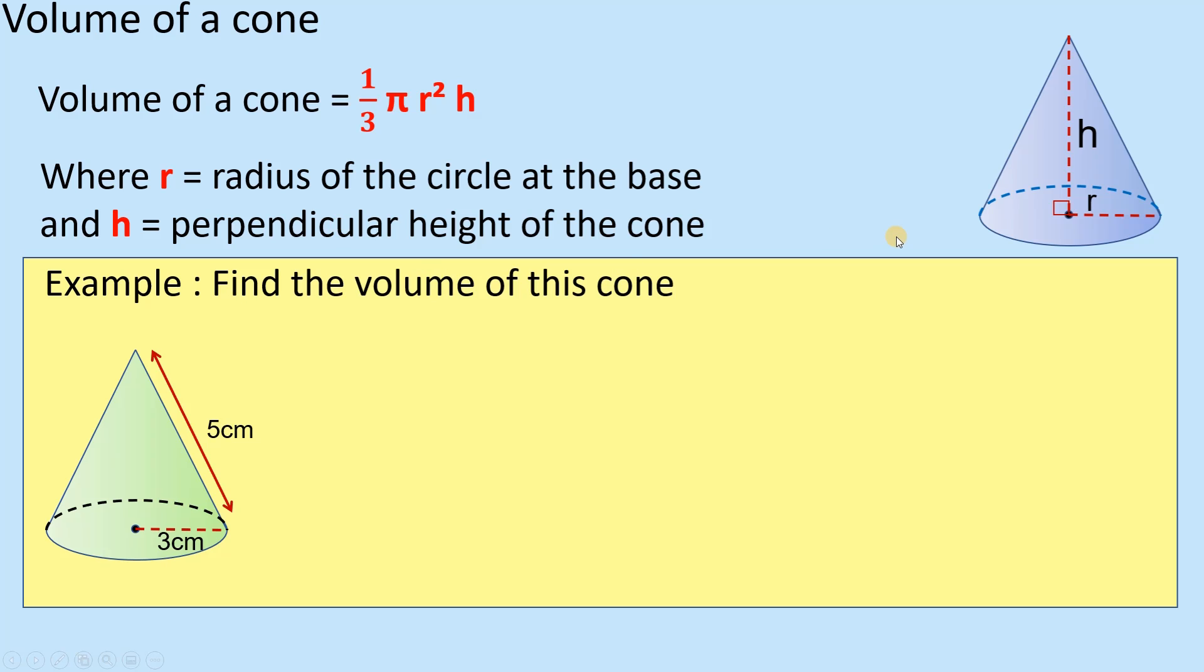Right, so I've got to find the volume of this particular cone. You've got 3 along here and 5 down here. Well, there's a problem straight away: you do not have the perpendicular height, you have this slant height. So the first thing you need to do is figure out the perpendicular height.